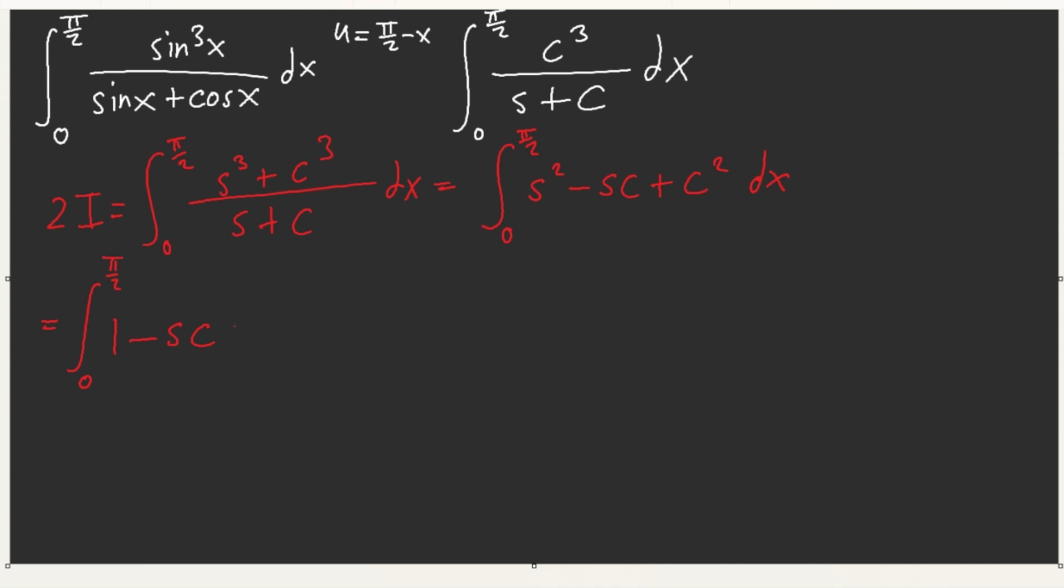We have 1 minus sine cosine. And so now what we have is this is equal to pi over 2 minus let u equals sine of x. Then we get bounds 0 to 1. This is equal to pi over 2 minus 1 half. I believe that's correct. U square over 2.